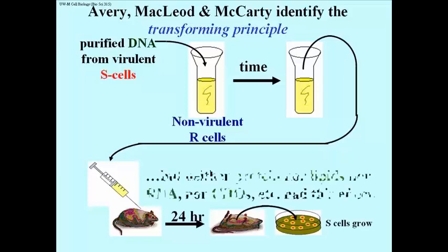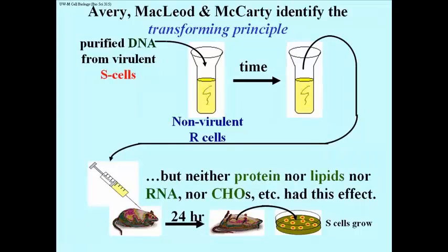The convincing thing, of course, was that when they purified either protein, or lipids, or RNA, or carbohydrates separately from the heat-killed S cell mixture, and tried to do the same experiment, adding those in turn to non-virulent R cells, they had no effect. The mouse then would survive a subsequent injection. So, Avery and company concluded that the DNA from the S cells was the transforming principle.